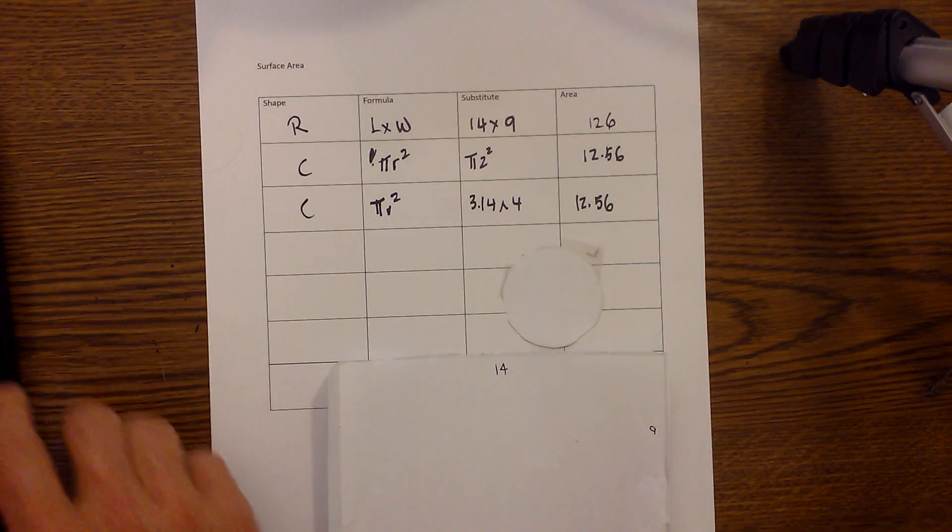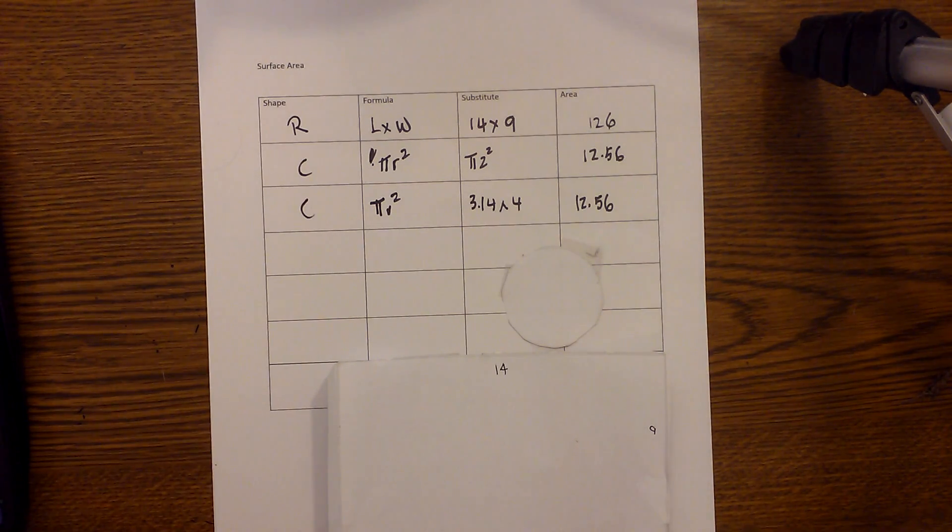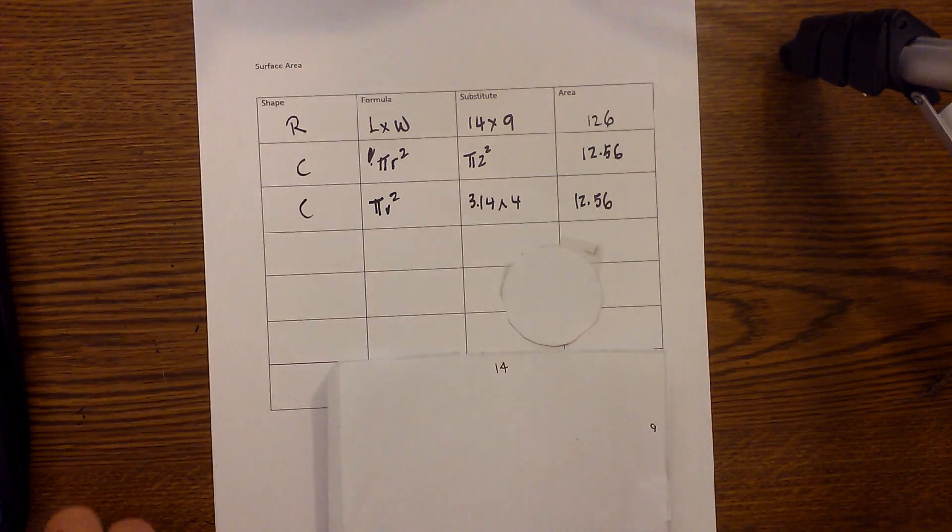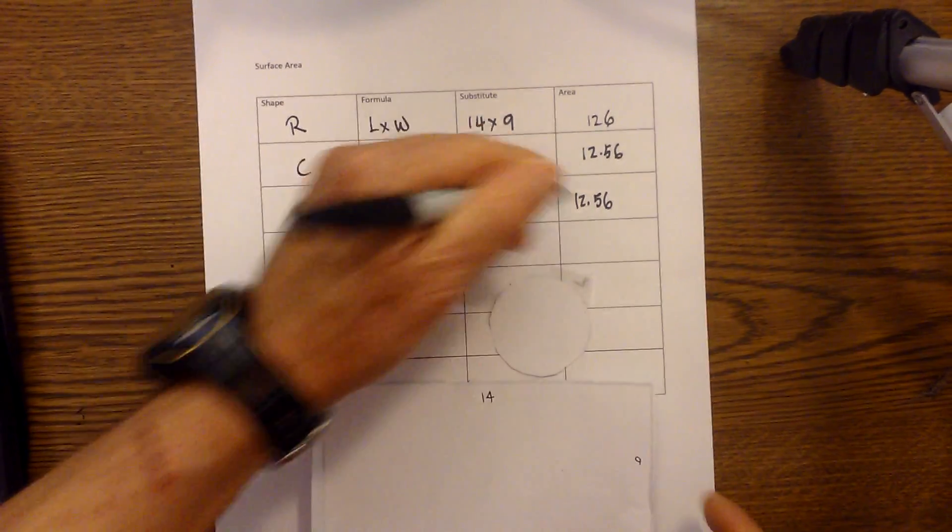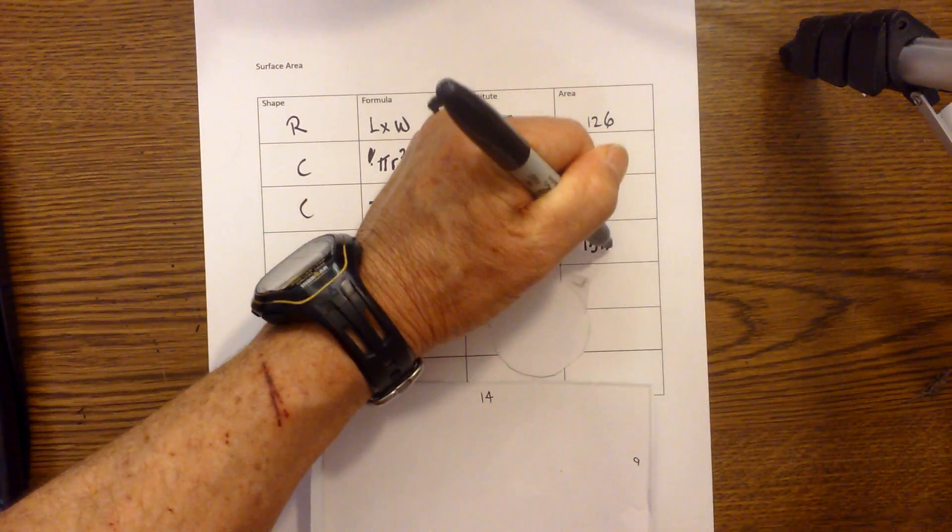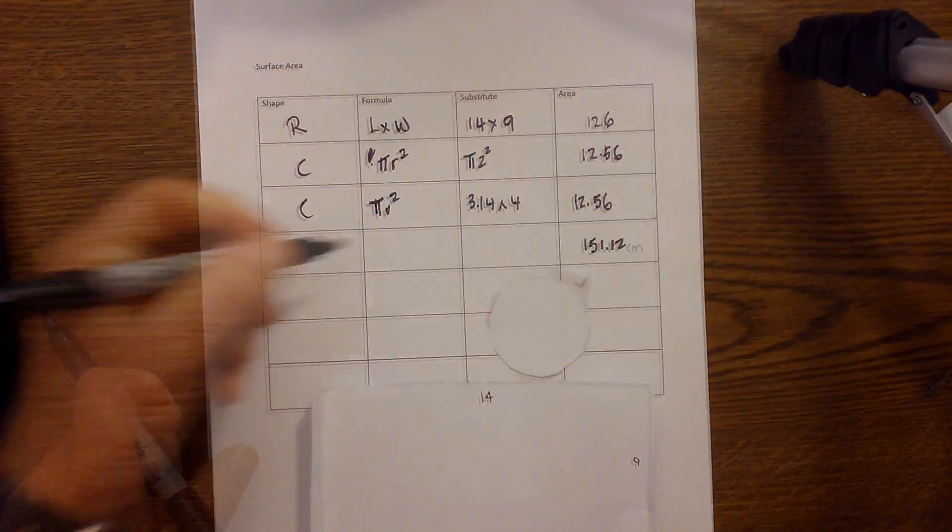And now all I do is add this up, so I take 126 plus 12.56 plus 12.56 and that equals 151.12. And surface area, it is always centimeters squared.